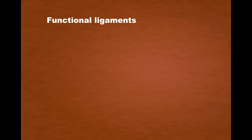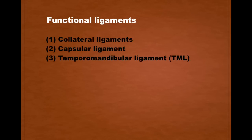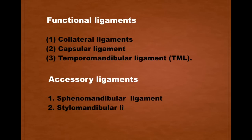TMJ has three functional ligaments for support: the collateral ligament, the capsular ligament, and the temporomandibular ligament. There are also two accessory ligaments: the sphenomandibular ligament and the stylomandibular ligament. In the next video, we will discuss in detail about the ligaments.